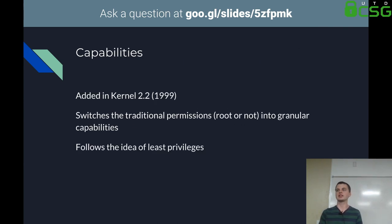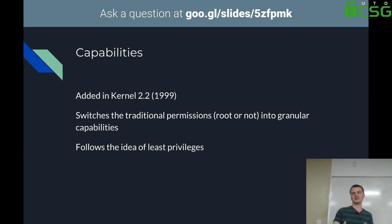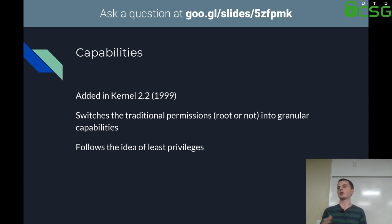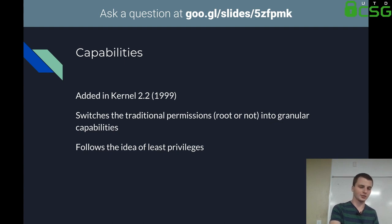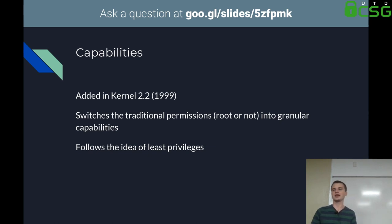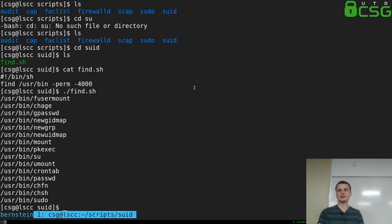Now something significantly more granular: the Linux capability system, added in kernel 2.2. It switches the traditional privilege model of root vs. non-root into more granular capabilities, following the principle of least privilege. You're allowed to assign to binaries only the things they need to continue executing. Setuid allows a binary to do anything as root — very easy to break. Instead, if you need to write raw packets to a socket, you should set that specific capability rather than making the whole binary setuid.